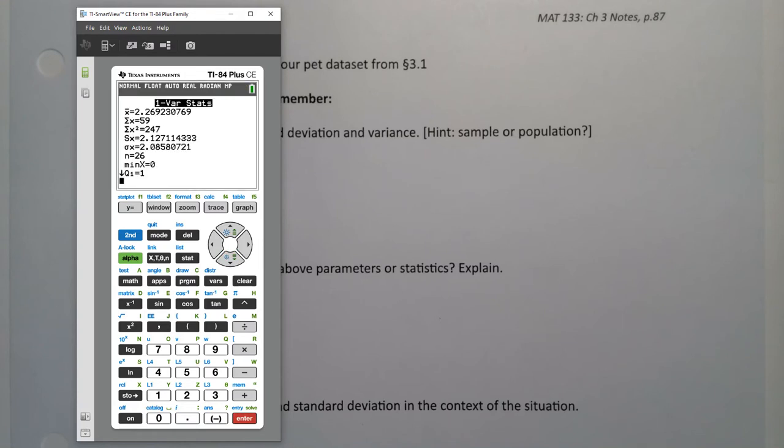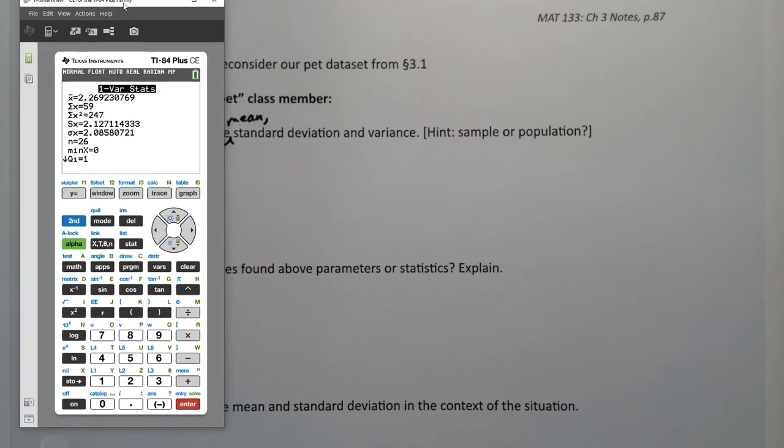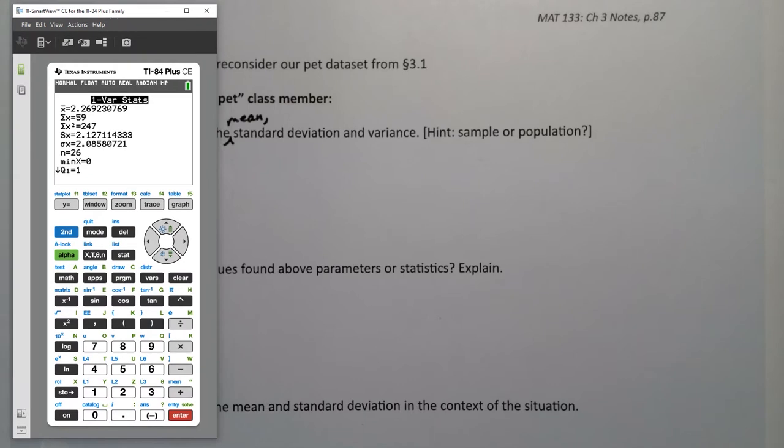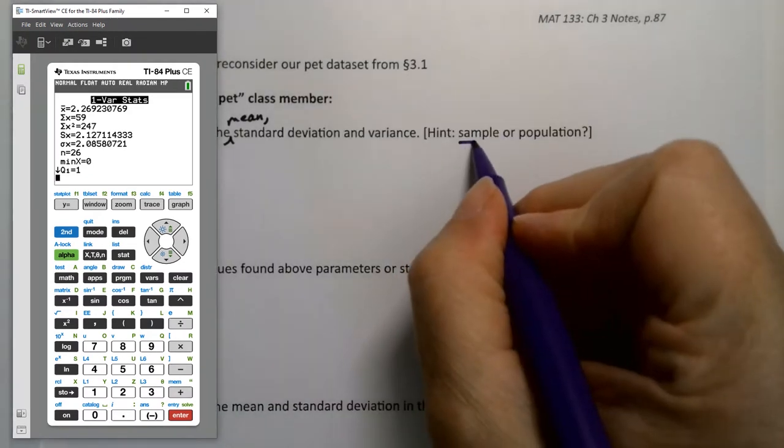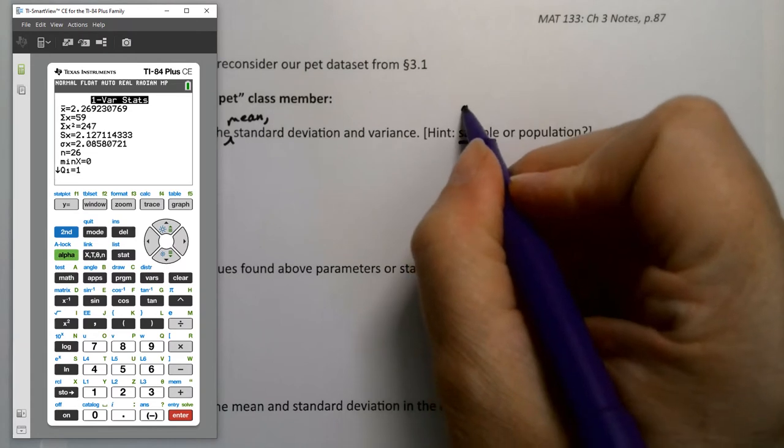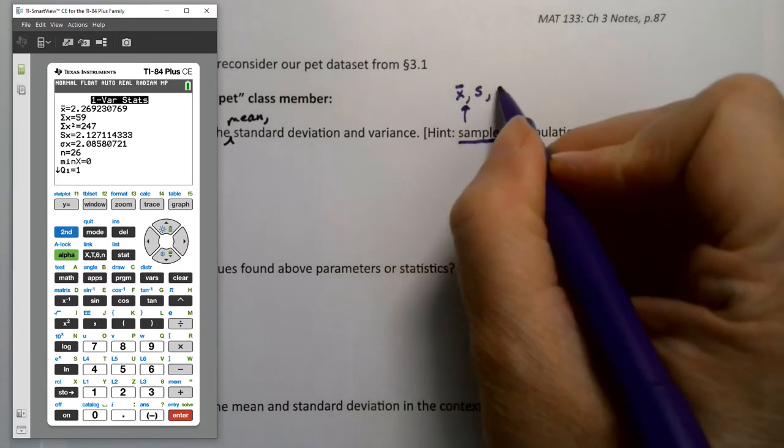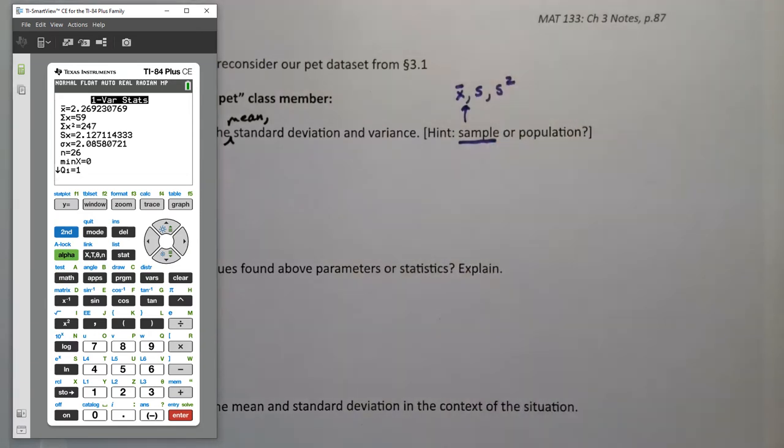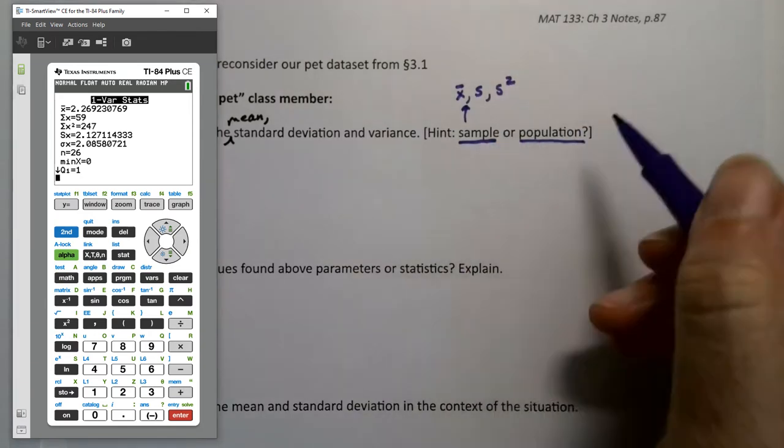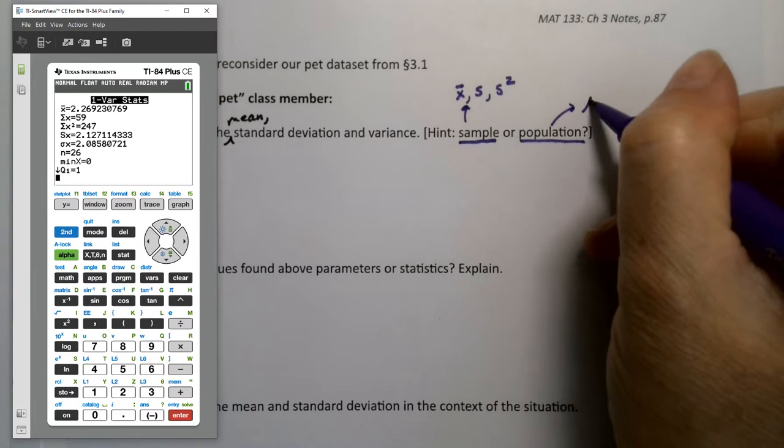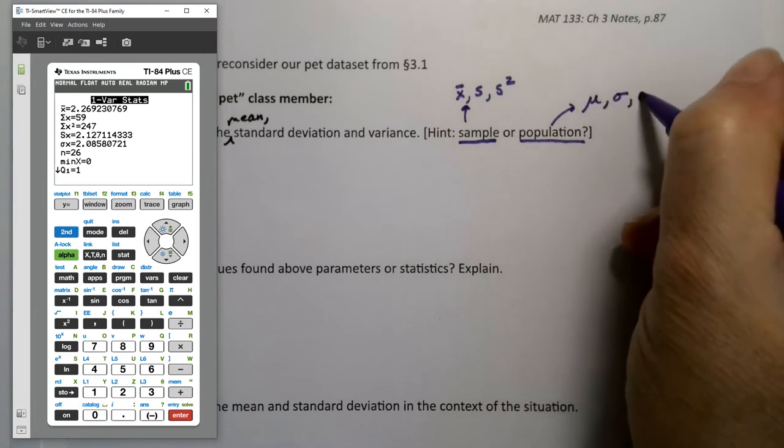You can see the mean is right up there at the top, 2.269. But then think about which standard deviation you want, because the calculator finds two of them for you. The calculator finds sample standard deviation. So the sample mean is x bar, sample standard deviation is s, sample variance is s squared. And it also finds the population value, which would be mu, sigma, and sigma squared.